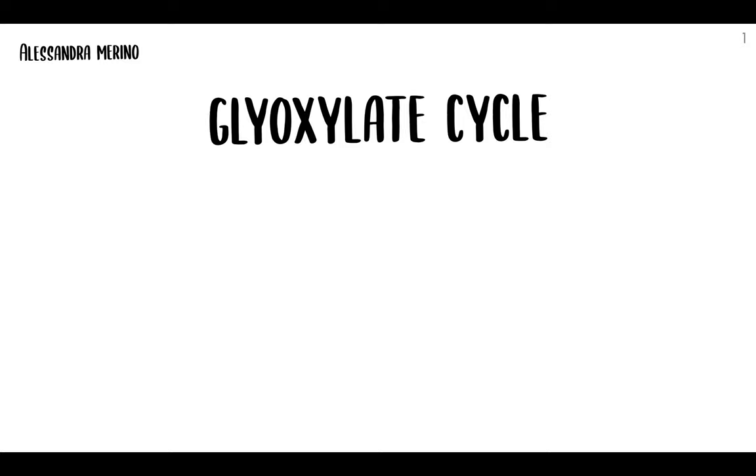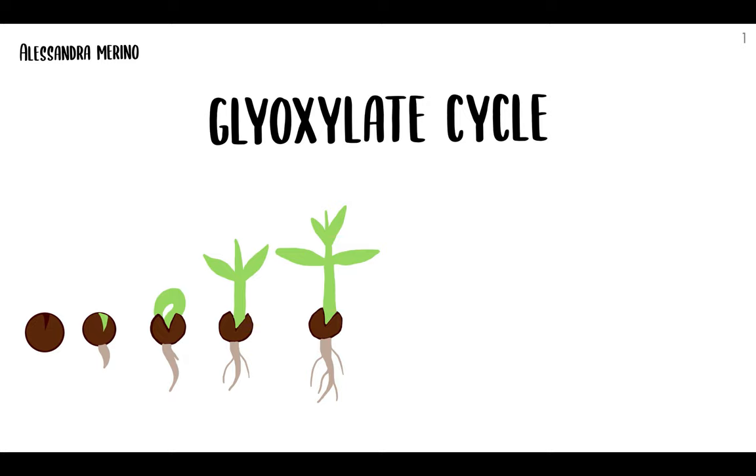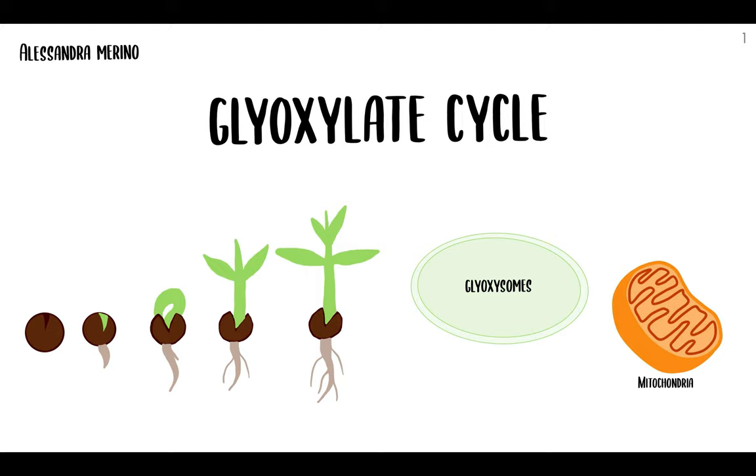So here I have a little germinating plant drawing, which means that the glyoxylate cycle is definitely taking place within it. The cycle is important because it is how the plant survives, and it is crucial in carbohydrate metabolism in plants.